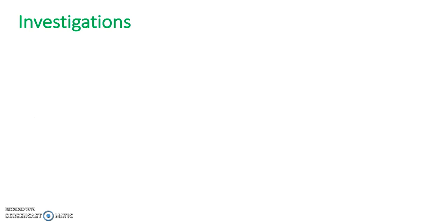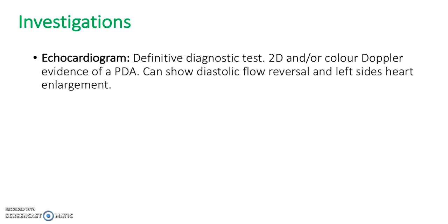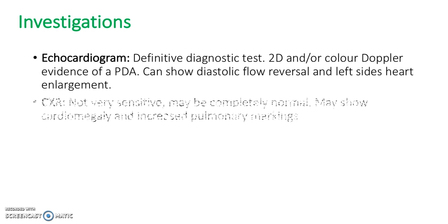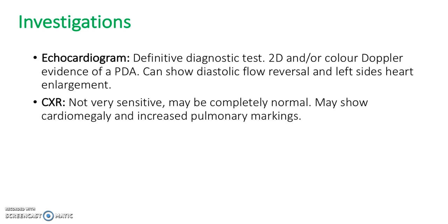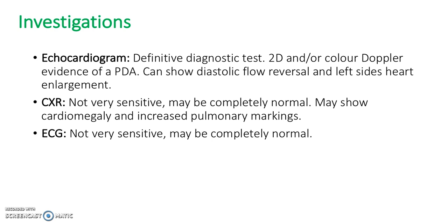What investigations are we going to do for these patients? First, an echocardiogram — this is the gold standard diagnostic test. In 2D and colour Doppler you can see evidence of a PDA; it can also show diastolic flow reversal and enlargement of the left side of the heart. A chest x-ray isn't very sensitive — it may be completely normal, or it may show cardiomegaly and increased pulmonary markings, but it's not a very good diagnostic tool. An ECG also isn't very sensitive and may be completely normal.